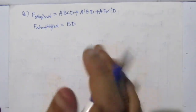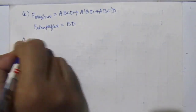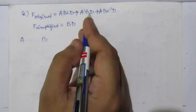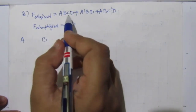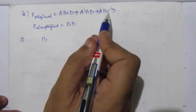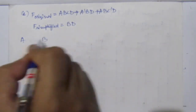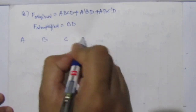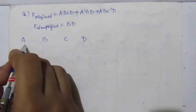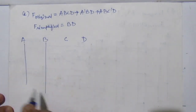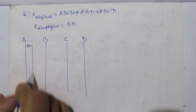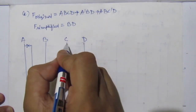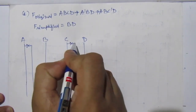Here we also have four variables a, b, c, and d. We only need complements for ā and c̄. Use inverters to get ā and c̄. The first expression is a·b·c·d — use an AND gate with all four inputs. The second is ā·b·d — use an AND gate.